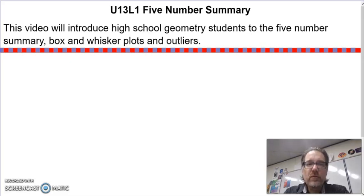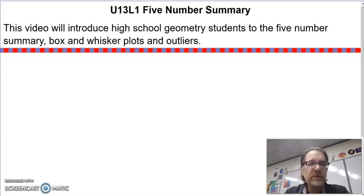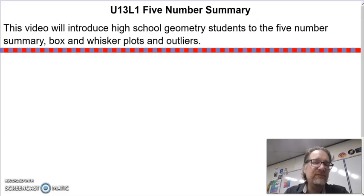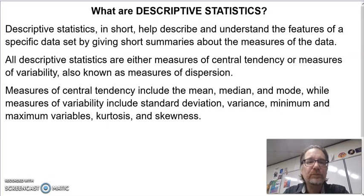Hello, Patriots. In this video, we're going to be starting some statistics. They've moved it from Algebra 2 into Geometry, and we're going to deal with it. In this portion of statistics, we're going to talk about what we call a five-number summary, and we're going to be making a box and whisker plot.